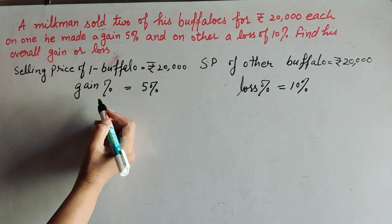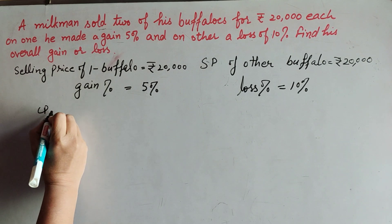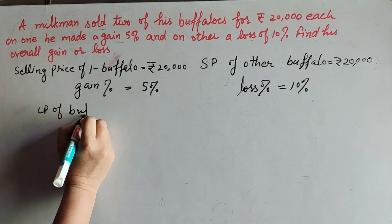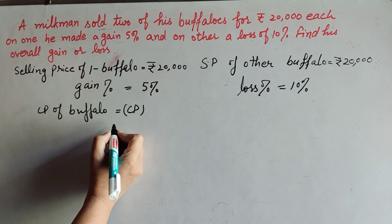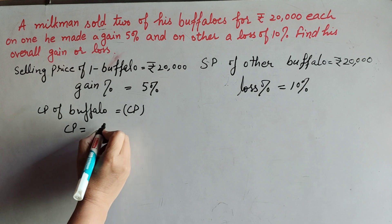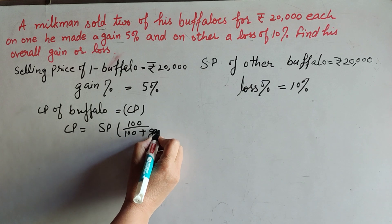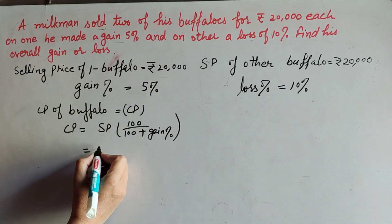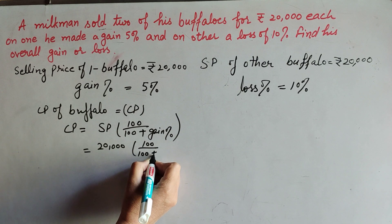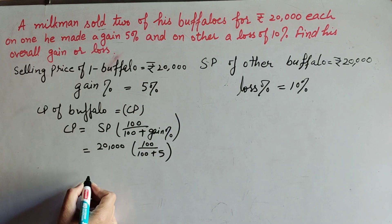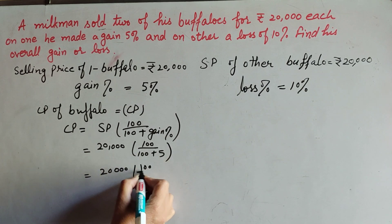Now we find the cost price of both buffaloes. The selling price of one buffalo is 20,000 and the gain is 5%. The cost price of the first buffalo: we suppose cost price equals CP, which is what we have to find. The formula to find cost price is: CP = SP × 100 / (100 + gain%). So cost price = 20,000 × 100 / (100 + 5) = 20,000 × 100 / 105.